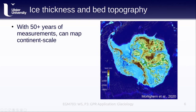With datasets that now span over 50 years, we've been able to map ice thicknesses and bed topography on the scale of entire continents, like the bed topography map shown here for Antarctica. We can see, for example, how most of West Antarctica, the left side of the image, is actually below sea level. This has very important implications for how the ice sheet will change in a warming climate, including the potential for very large rises in global sea level. In East Antarctica, the right side of the image, most of the ice sheet is grounded above sea level, though there are some deep trenches that reach into the interior.